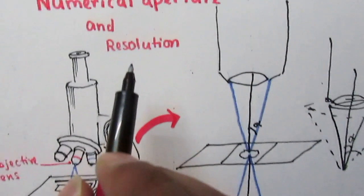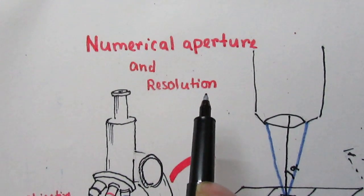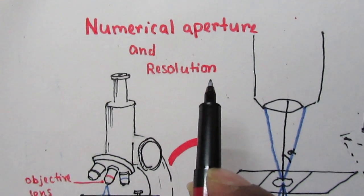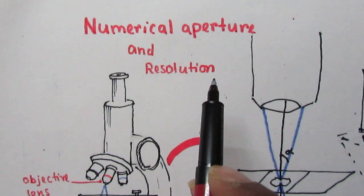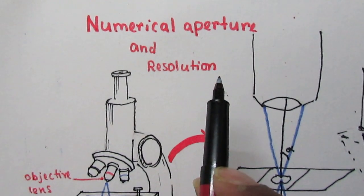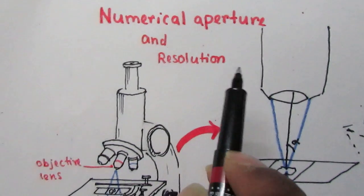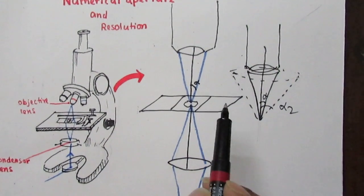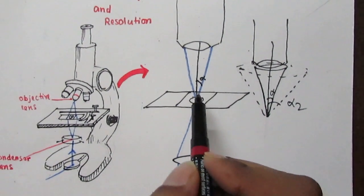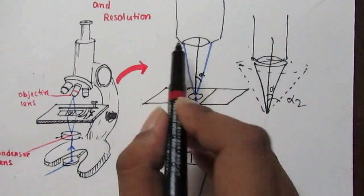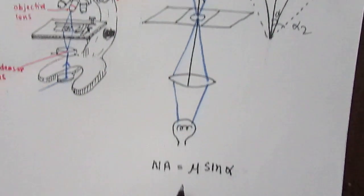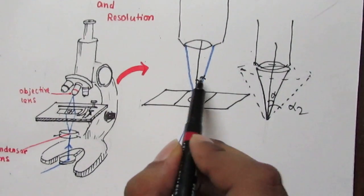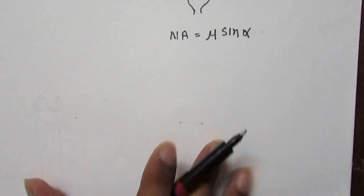In this video I'm going to talk about numerical aperture and resolution of a microscope. We hear a lot of terms like resolution, limit of resolution, and resolving power of a microscope, but we don't have a clear idea about what resolution of a microscope is. For resolution, we need some idea about numerical aperture. Numerical aperture of a lens is the capability of the lens to gather light information - it gathers light in the form of a light cone. Numerical aperture is written as mu times sine alpha, where alpha is the half angle with the optical axis.